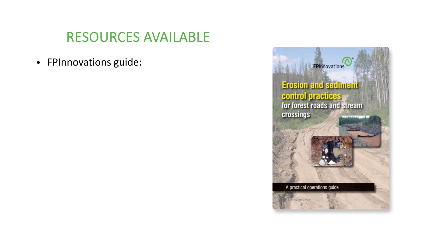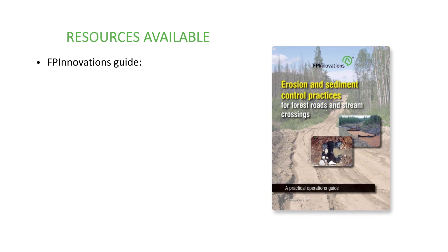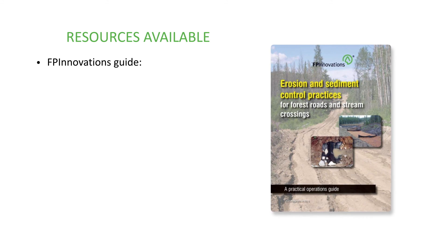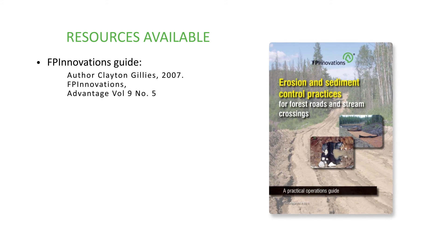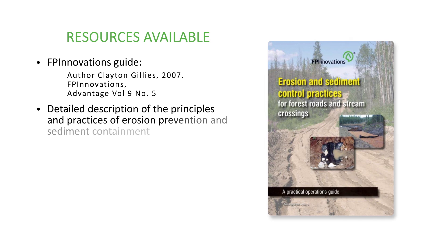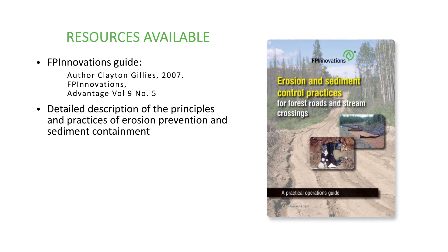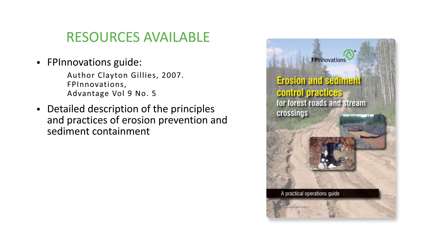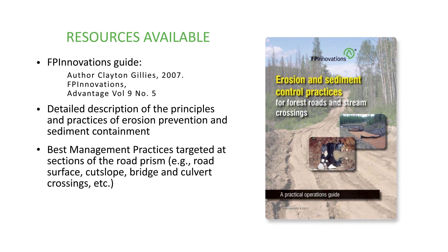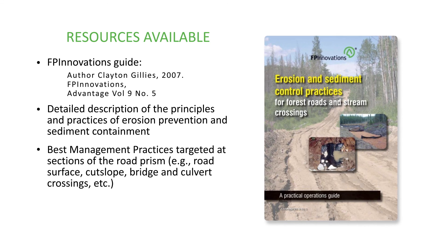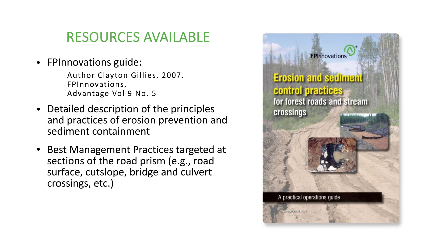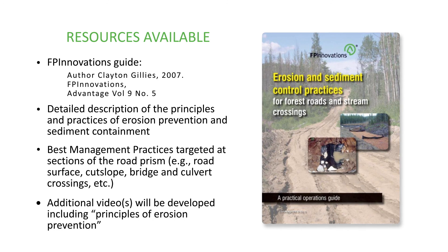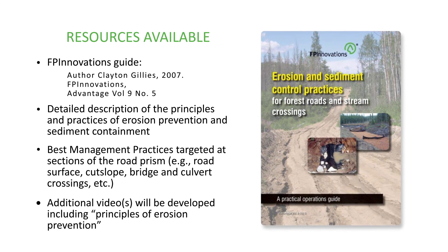Resources available: The FP Innovations Guide, 'Erosion and Sediment Control Practices for Forest Roads and Stream Crossings: A Practical Operations Guide,' is available as Advantage Volume 9, Number 5. The guide provides detailed description of the principles and practices of erosion prevention and sediment containment. Best management practices targeted at sections of the road prism — such as the road surface, cut slope, or bridge and culvert crossings — are all presented within the guide. An additional video has also been prepared targeted at principles of erosion prevention.